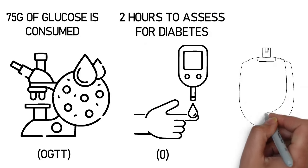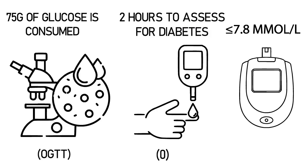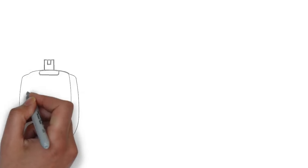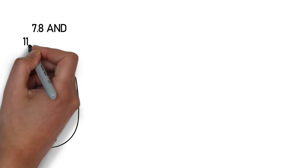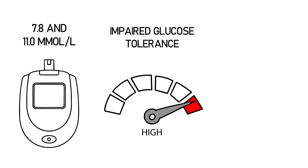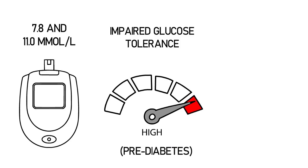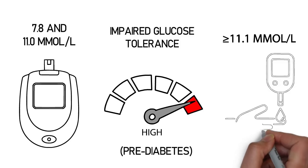In a normal response, glucose levels should be less than or equal to 7.8 millimoles per liter at two hours. If levels fall between 7.8 and 11.0 millimoles per liter, it indicates impaired glucose tolerance — prediabetes — while levels greater than or equal to 11.1 millimoles per liter confirm a diagnosis of diabetes.